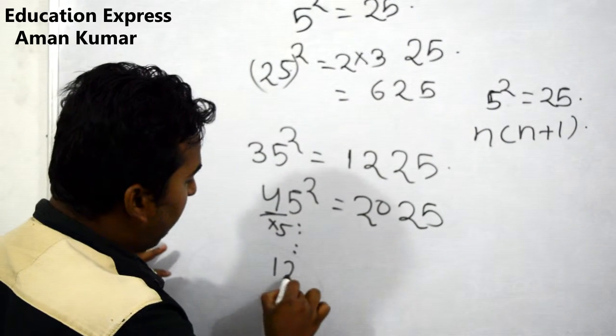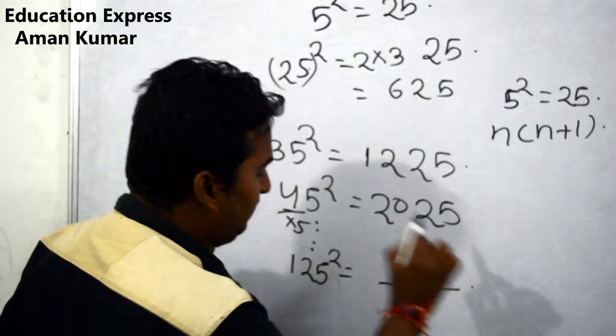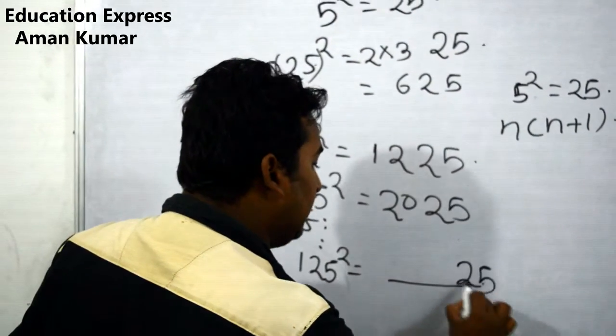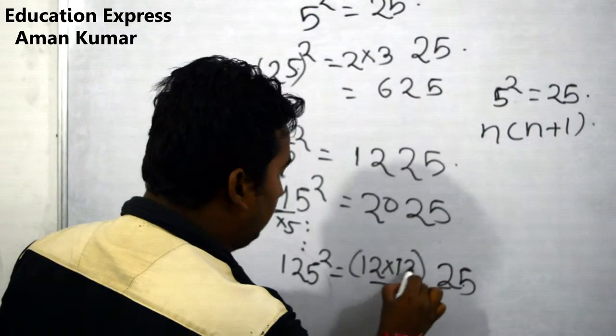Up to 125 squared, we can evaluate the value. 5 squared is 25, next 12 into 13.